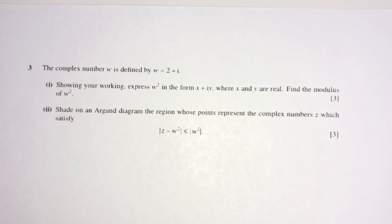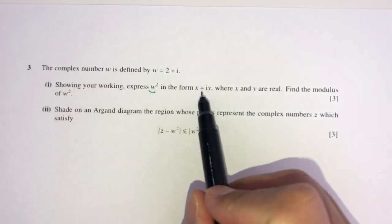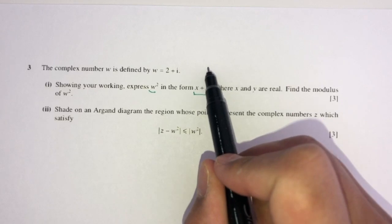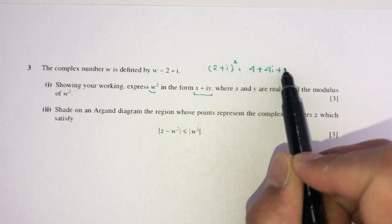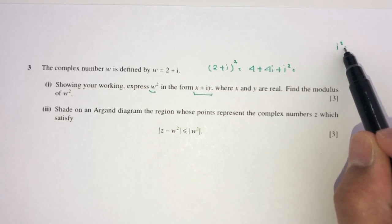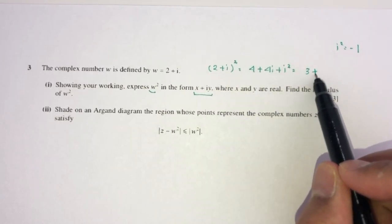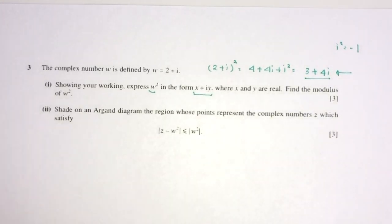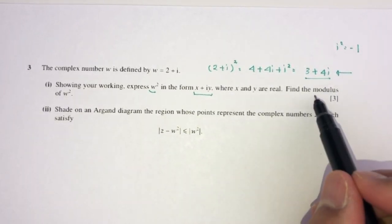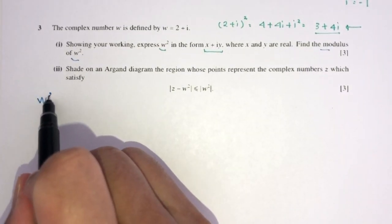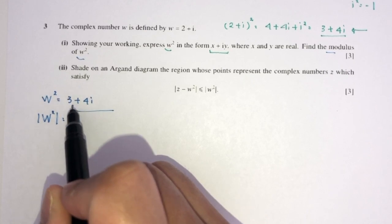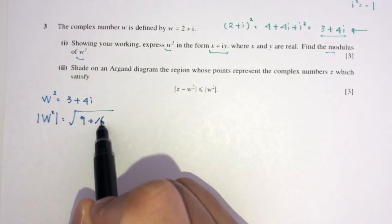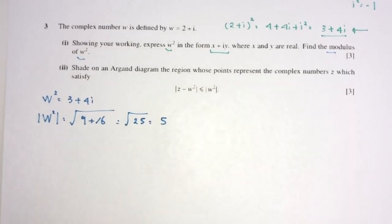Now let's move on to question number 3. The complex number w is defined as 2 + i. For part 1, we need to find w² and express it in the form a + bi. So w² = (2 + i)² = 4 + 4i + i². Since i² = −1, this gives 4 − 1 + 4i = 3 + 4i.